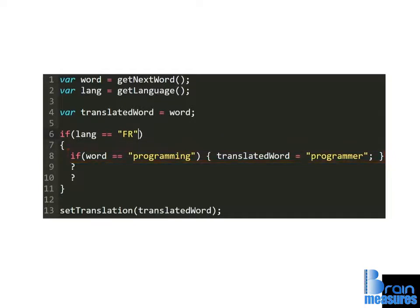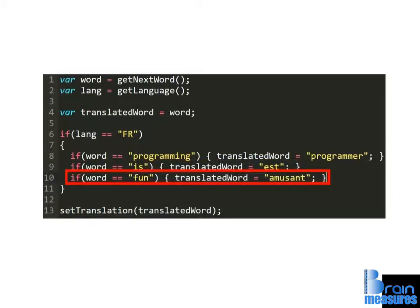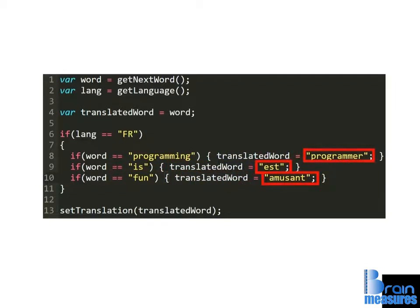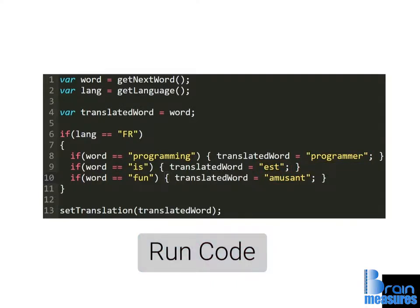With that clear, let's add the code to translate the two other words. Add an if statement to translate the word is and another if statement to translate the word fun. Both code blocks should assign the variable translated_word its French equivalent. When you're done, run your code to see what happens. If the program doesn't translate the first word properly, don't worry, we'll fix it later.